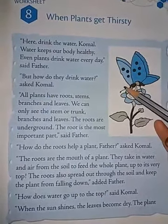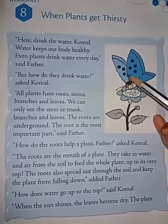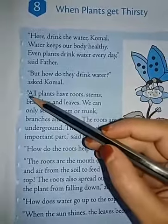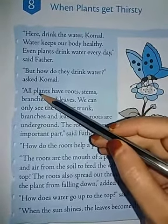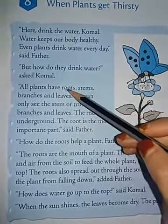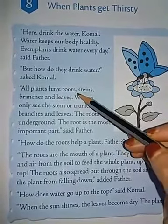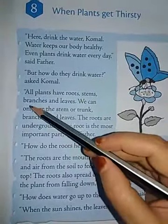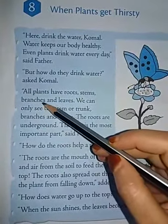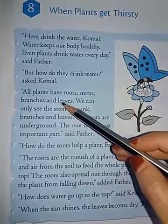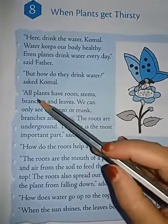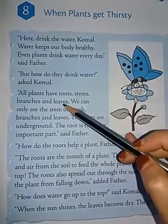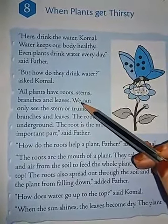Kumal is asking her father how plants drink water. Father replies: all plants have roots, stems, branches, and leaves. All plants have roots, stems, branches, and leaves.